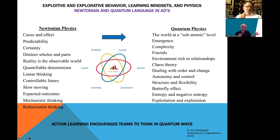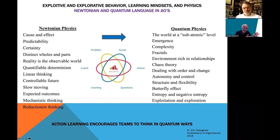Newtonian physics believes in cause and effect — the greater the input, the greater the output — with a direct, predictable relationship. It believes in certainty, that you can distinguish between the whole and the parts, that what you observe is reality, that there is determinism, linear thinking, a controllable future, slow-moving expected outcomes, mechanistic and reductionist thinking.